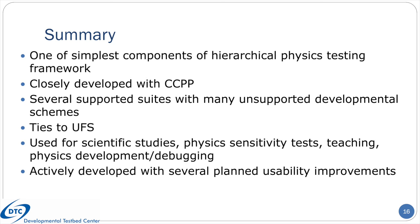To summarize, the CCPP single column model is one component of a UFS-based hierarchical physics testing framework whose components share the CCPP as a means to interface with physics. It is developed in concert with the CCPP and publicly released alongside it. It can be used with a number of supported suites including the operational GFS physics, as well as non-supported physics schemes in the development branch. It is distinct from the FV3 dynamical core yet shares critical similarities to maintain physics compatibility. It has been used in a wide range of applications and is well suited to investigative studies of physics suite behavior, and is being actively developed with a number of expected usability and functional improvements in the near future.